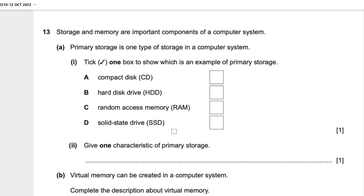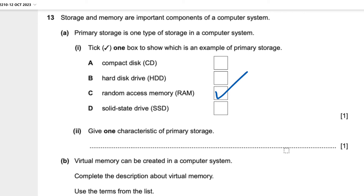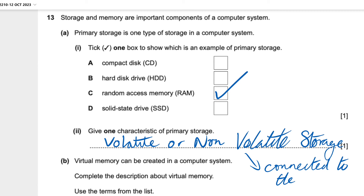Question 13: Storage and memory are important components of a computer system. Primary storage is one type of storage. Tick one box to show which is an example of primary storage. A CD is portable storage; the hard disk drive and solid state drive are secondary storage. The one left is RAM — RAM is primary memory. Give one characteristic of primary storage: it is either volatile or non-volatile. You could also put that it's connected to the CPU.